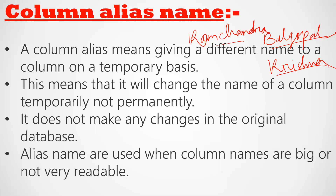In a database, we store data in table form. Suppose a column name is difficult, then we give it an alias name — that is what we call a column alias name. This means it will change the name of a column temporarily, not permanently. If we use a column alias name, we change the name temporarily. It does not make any changes in the original database. The original column name stored in the table remains the same.